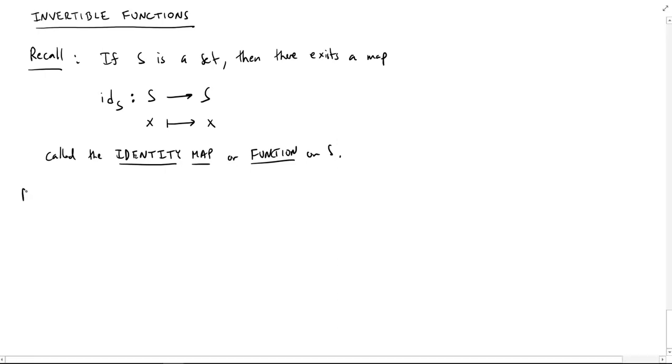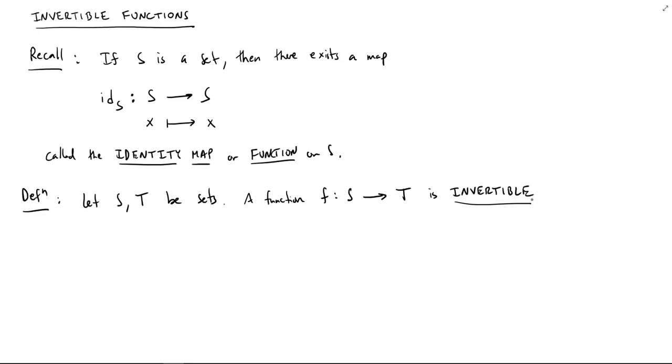So let's make the situation now a little more complicated. We're going to have two sets, S and T. So now we're going to assume we have some function that goes from S to T. A function f from S to T, we're going to say that it's invertible if there exists a function which goes backward.